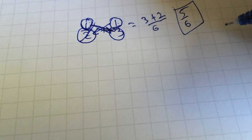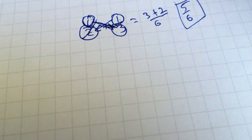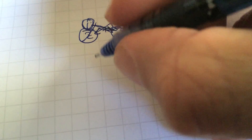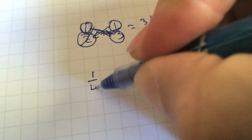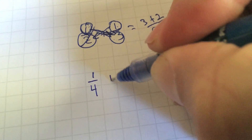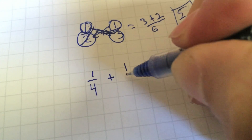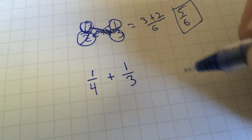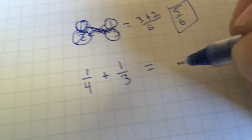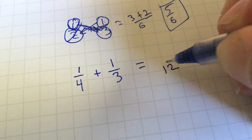Let me spell it out a little better with maybe a different example. Let's say you have one fourth and you're adding that to one third. Your common denominator is going to be 12.